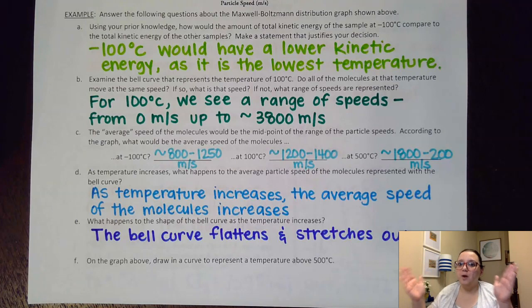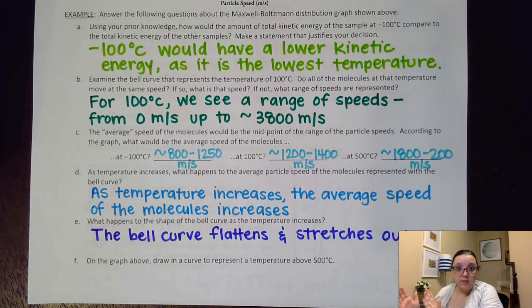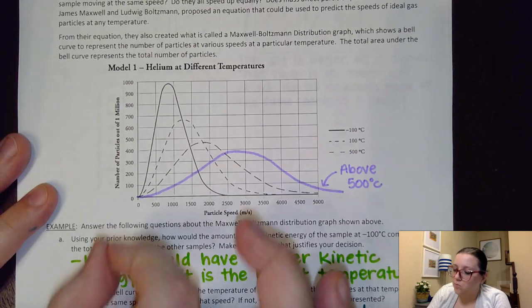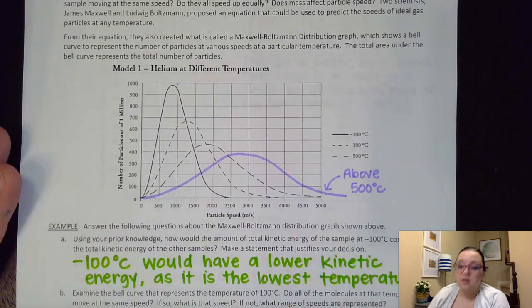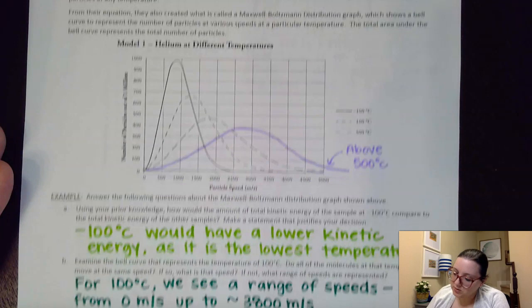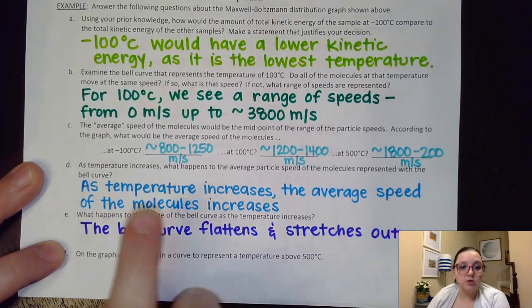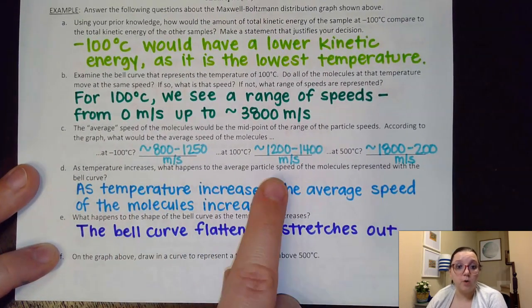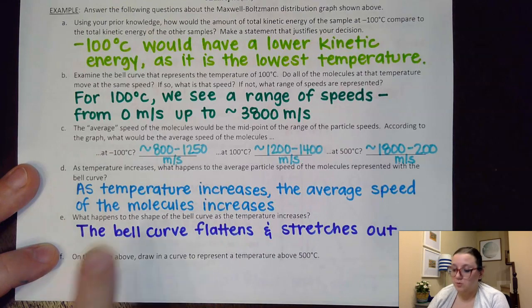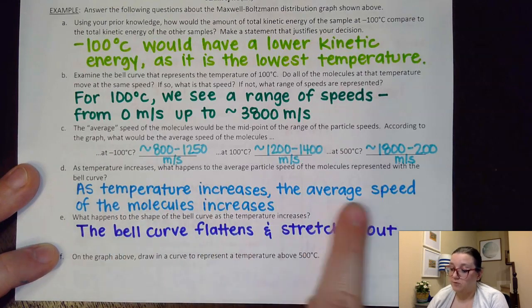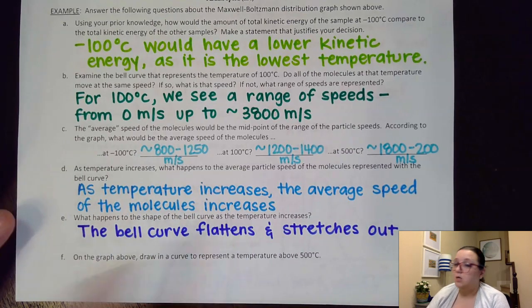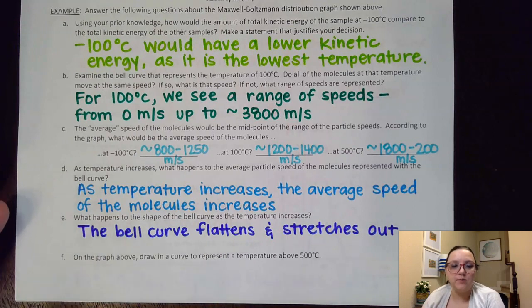However those ranges are expanding. So I'm getting again an increase in speed as I increase my temperature but the range, the expansion of that graph is growing. So it says here as temperature increases what happens to the average particle speed? Hopefully we noted as temperature increased the average speed of the molecules increases which is not surprising. We would have probably expected that.